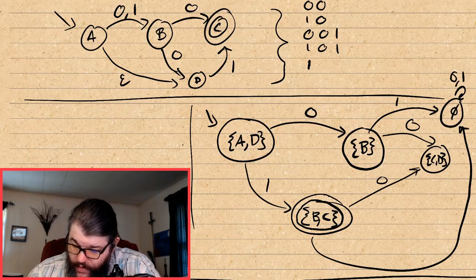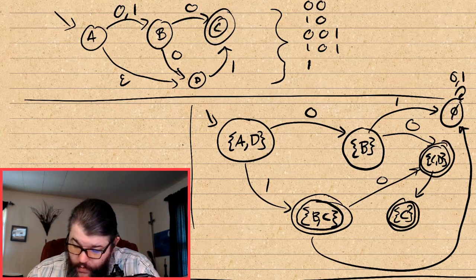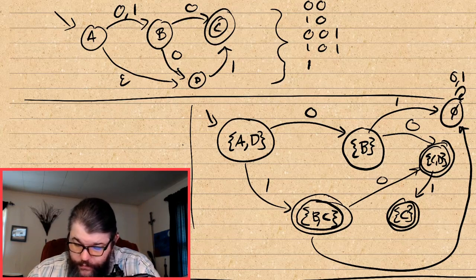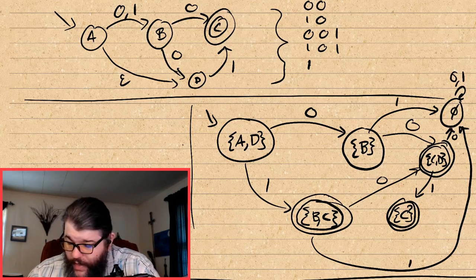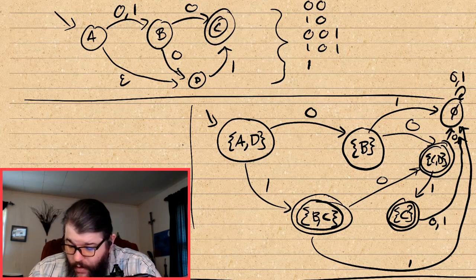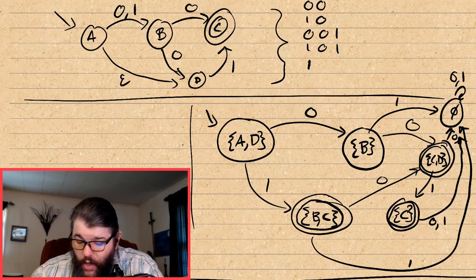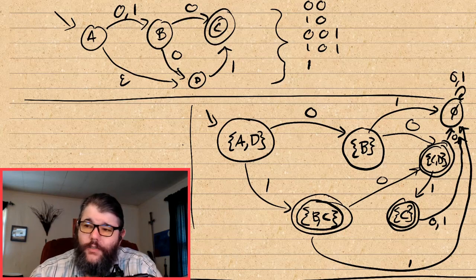Now we have state {C, D}. On a 1, C falls off but D goes to state C — so {C, D} on a 1 goes to {C}. We also forgot to circle our accept state up there — this state is an accept state because it contains C. On a 0, D falls off and C falls off, so {C, D} on a 0 goes to the null state. State C on both 0 and 1 also goes to the null state. So this is our new DFA — every state has exactly one transition for every input, no empty string transitions.